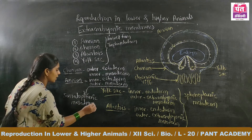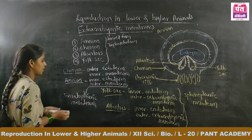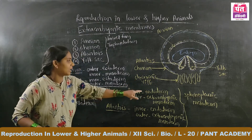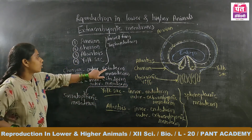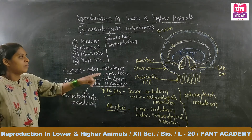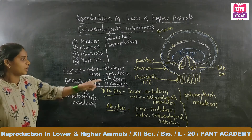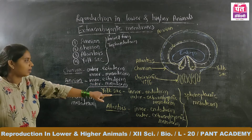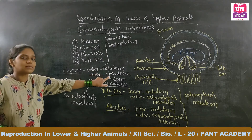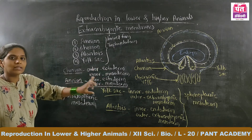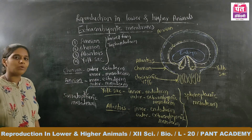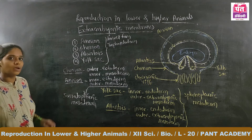To summarize: where there is a combination of endoderm and extra embryonic mesoderm — as in yolk sac and allantois — that is splanchnopleuric mesoderm. Where there is a combination of ectoderm and extra embryonic mesoderm — as in chorion and amnion — that is somatopleuric mesoderm. So there are two types of extra embryonic mesodermal layers: splanchnopleuric mesoderm and somatopleuric mesoderm.